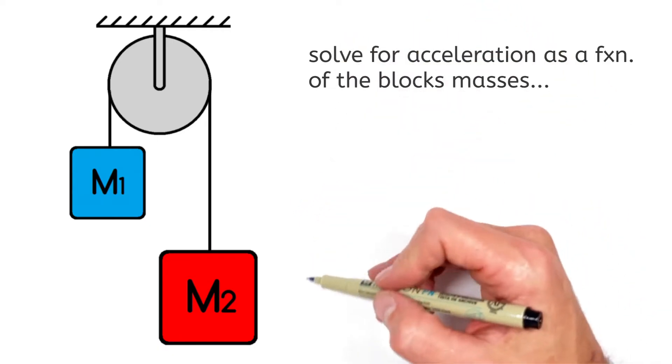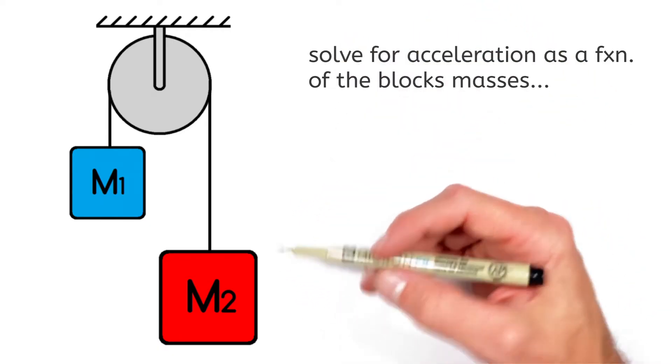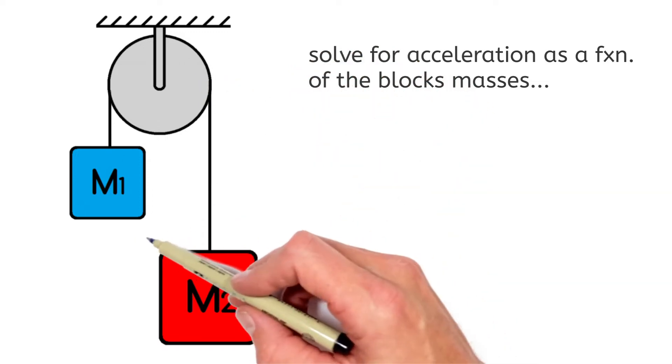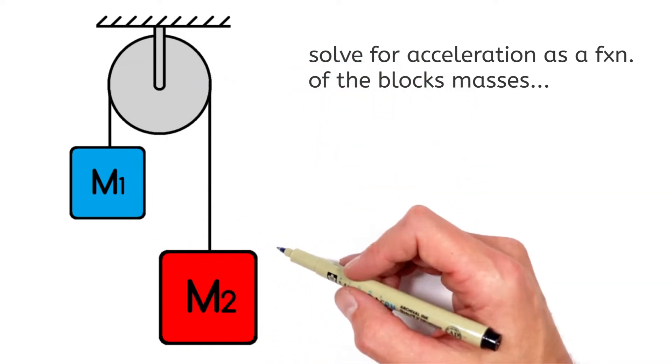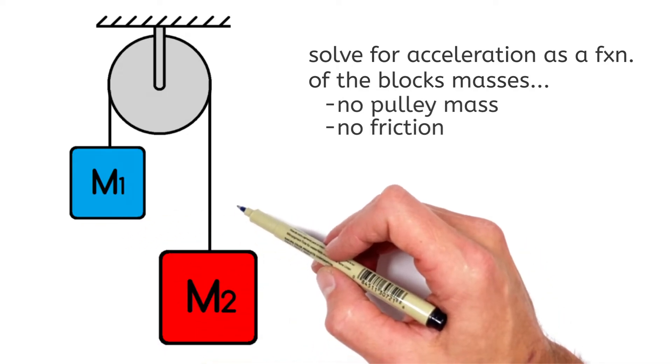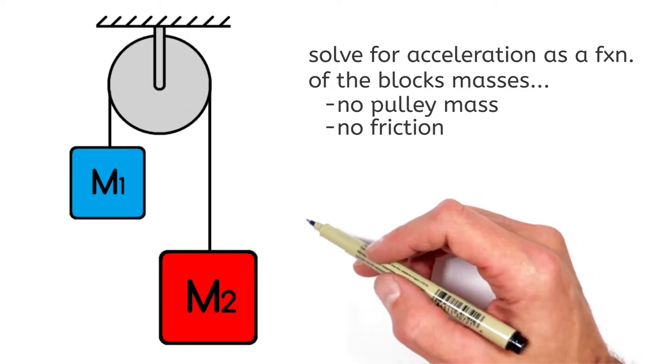Now there's a lot of variants or versions of this problem. Some include mass in this pulley and maybe even friction in here, but today we're just looking at the simplest version of this Atwood machine, and that is just two blocks with different masses and a massless, frictionless pulley.